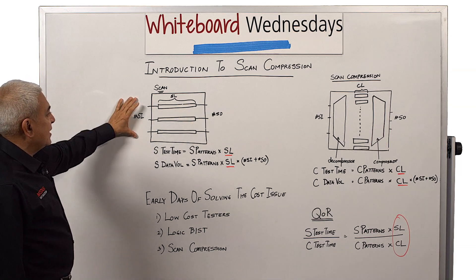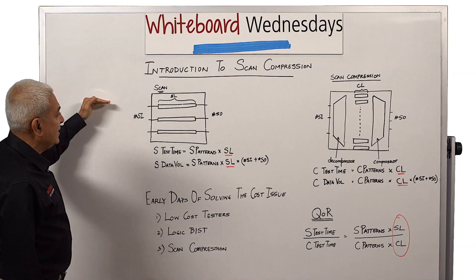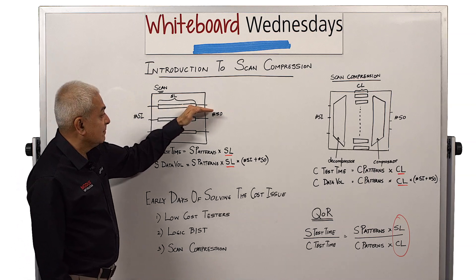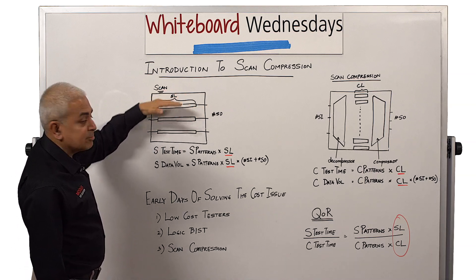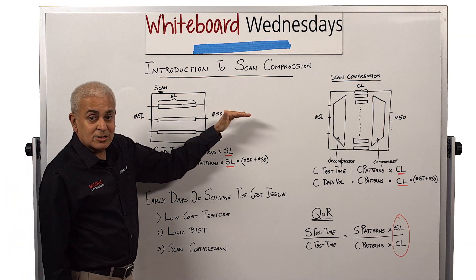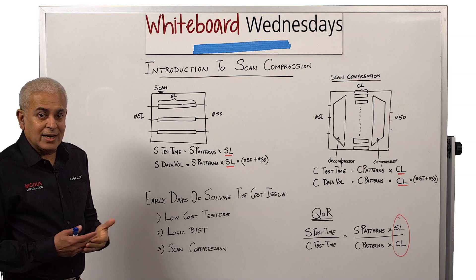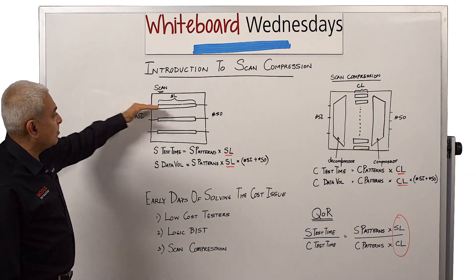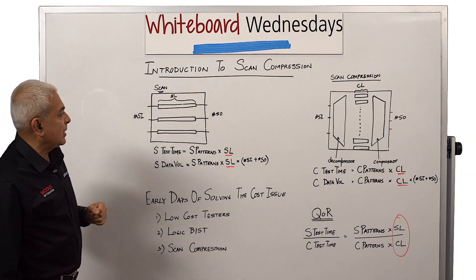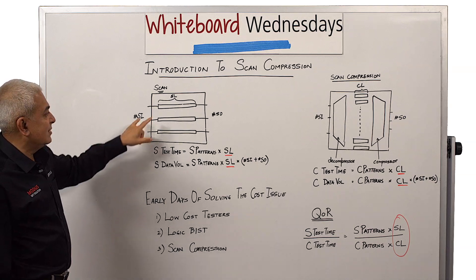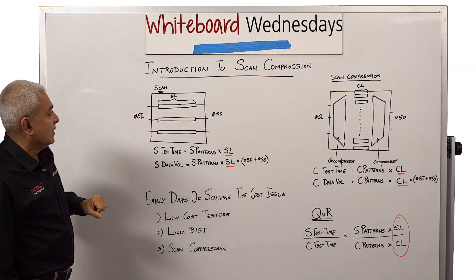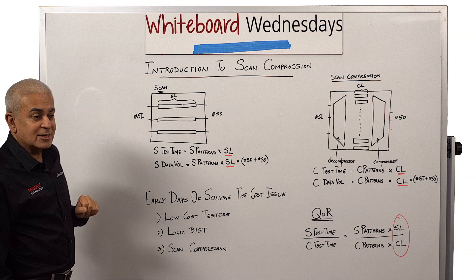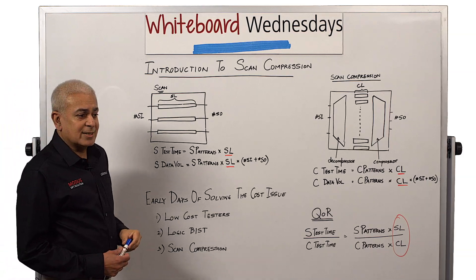So what does a test pattern look like in scan? What we end up doing is we apply a stimulus, which is a shift operation into the scan chains, and then after that we apply a capture cycle, and then we scan out the response. The adjacent patterns are overlapped, and hence the test time, if you were to calculate it for a single pattern, is the shift operation plus the capture cycle, which is primarily the shift operation alone, because it's pretty much the length of the chain. So if this chain length is about 100, then the shift time is about 100 cycles, and the capture cycle represents about one or two cycles.